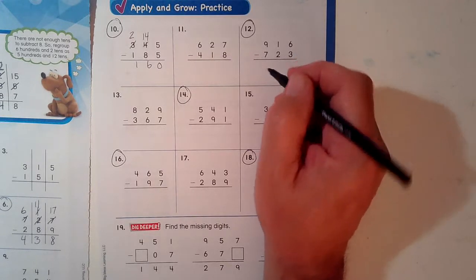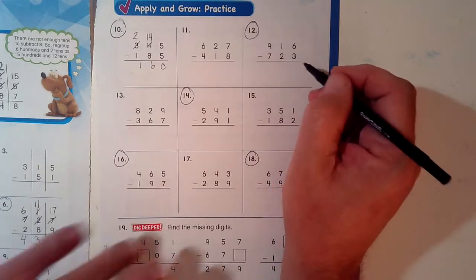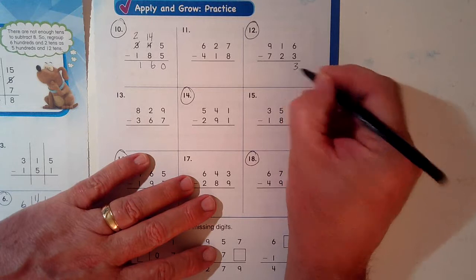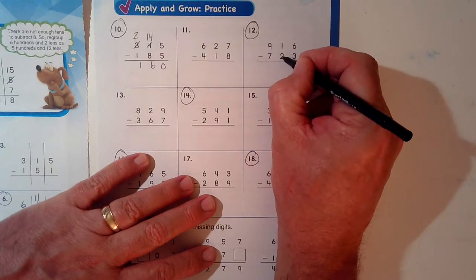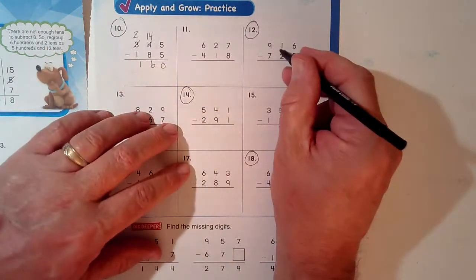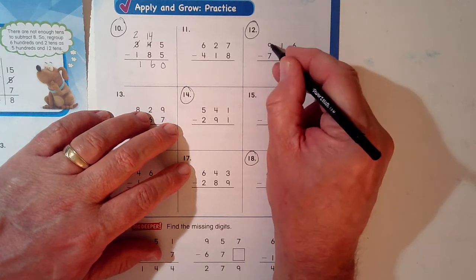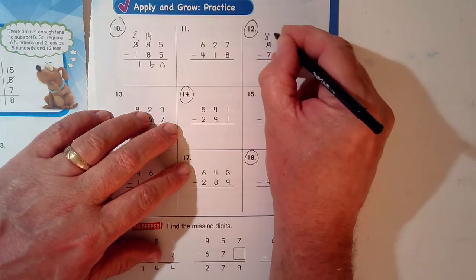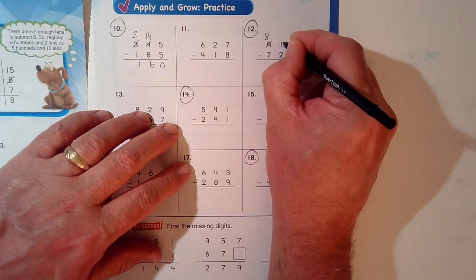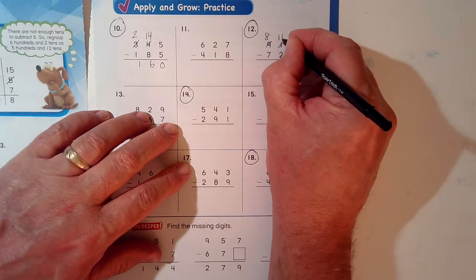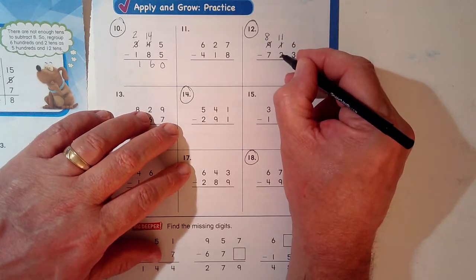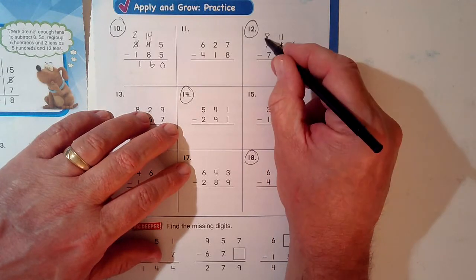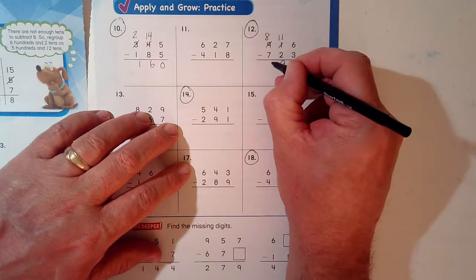Even problem 12. 6 minus 3, I can do it, it's 3. 1 minus 2, I can't do it. The bigger on the bottom than I have to borrow. That's not a 9 anymore, it's an 8. One of the sets of 10 goes over here. It's not 1, it's 11. 11 minus 2 is 9. 8 minus 7 is 1.